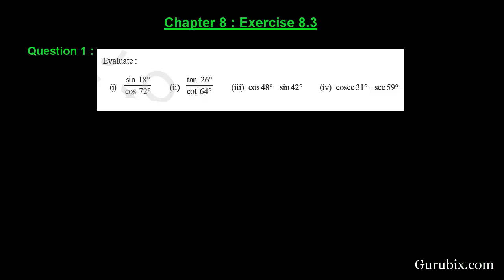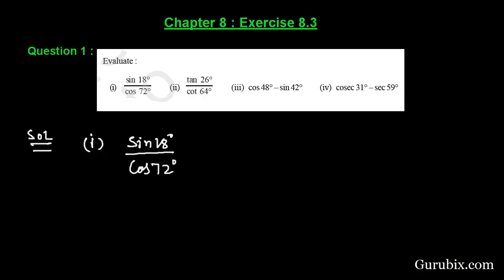Welcome friends, let us solve question number one of Exercise 8.3 of Chapter 8. The question says evaluate the following trigonometric values. We shall start with part one, where we have sine 18 degree over cos 72 degree. This is a question of trigonometric ratios of complementary angles.